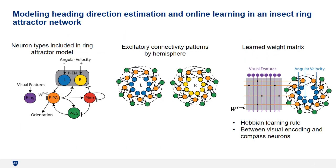In our modeling approach we utilize cell types observed in the insect protocerebral bridge and ellipsoid body. These neurons are organized by hemisphere in the protocerebral bridge. The excitatory EPG neurons shown in orange encode heading direction. PEN neurons in blue and yellow encode positive and negative angular velocities which shift the bump of activity. Ring neurons in purple encode visual features and connect to EPG neurons via a learnable weight matrix, updated with a Hebbian learning rule that associates co-active visual encoding neurons and EPG neurons. All neurons are modeled as leaky integrate-and-fire units.